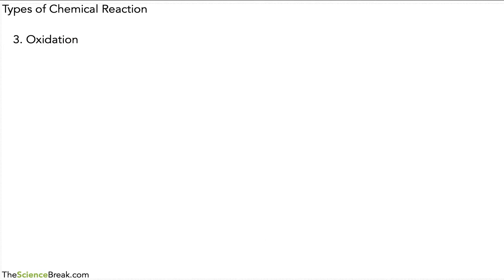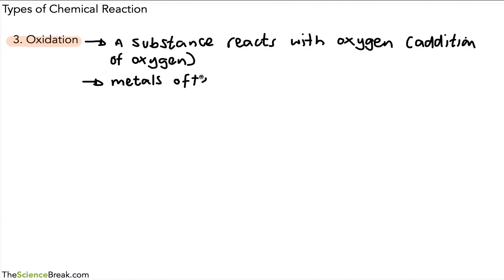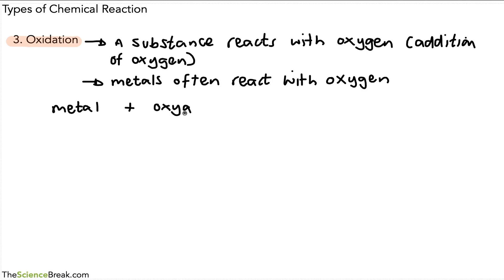The final reaction we want to look at is called oxidation, and it's quite a common one we deal with in chemistry. Oxidation is a type of reaction that involves the addition of oxygen — a substance reacts with oxygen. A common example is when we react metals with oxygen, as a lot of metals can react with oxygen. We can write a general equation: metal plus oxygen gives a metal oxide.